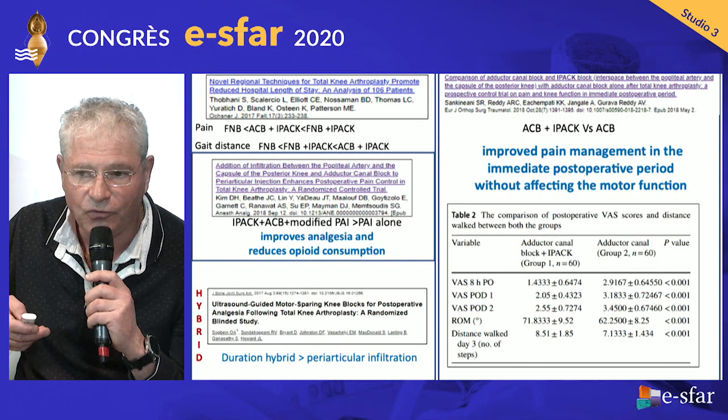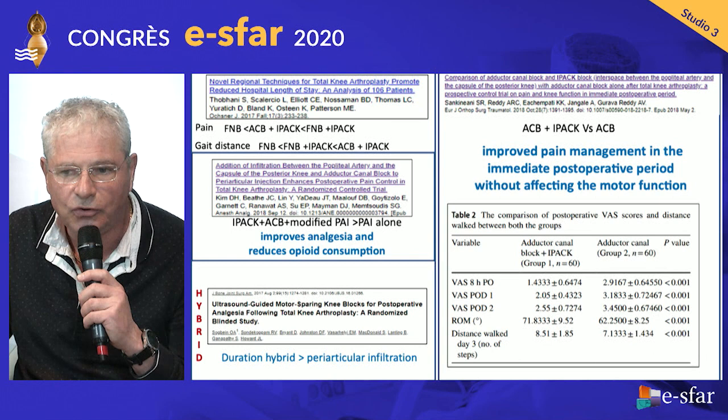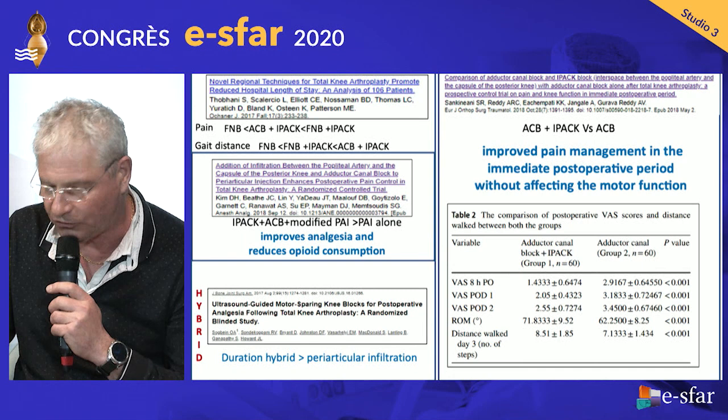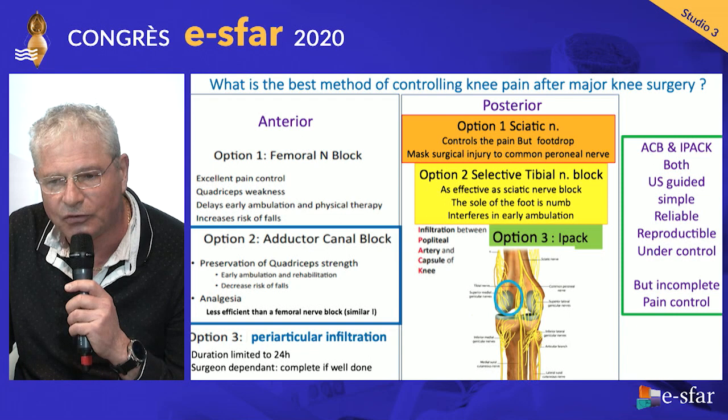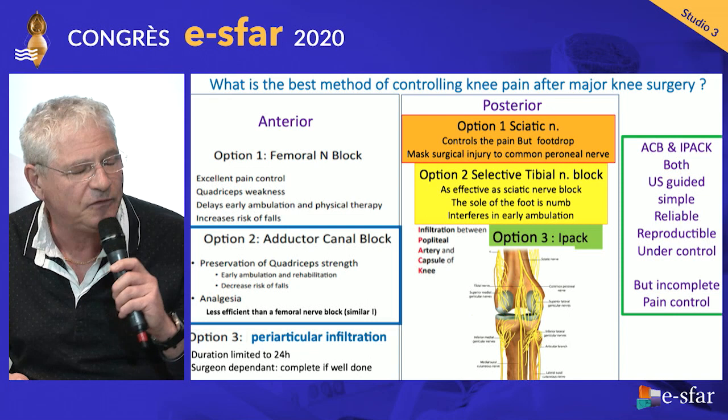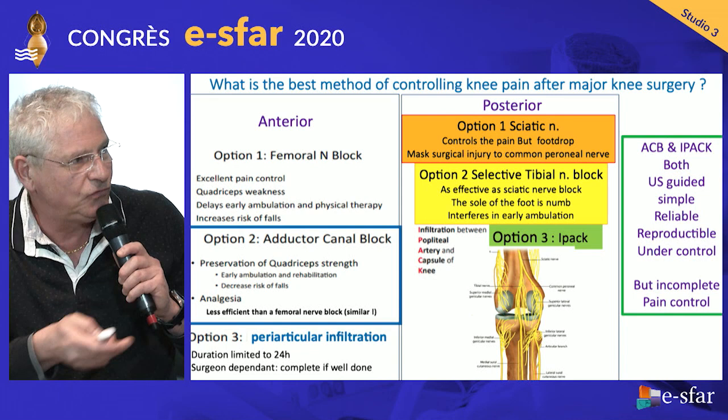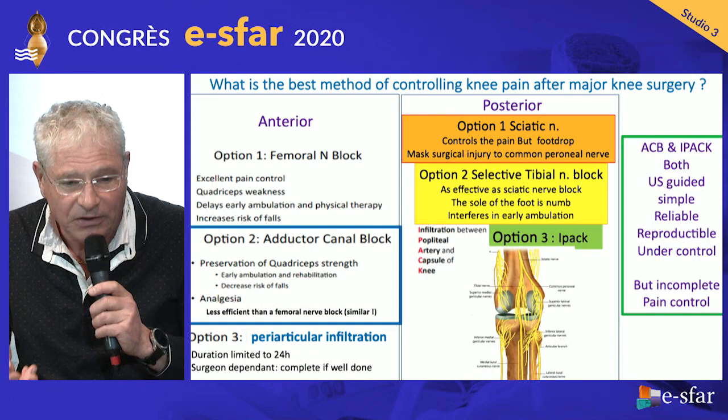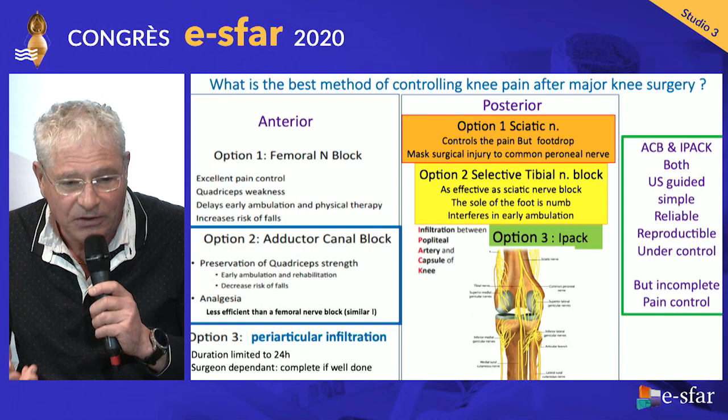If you decide not to perform a femoral and obturator nerve block and instead combine IPAC with adductor canal, you achieve pretty good analgesia — though not as complete as with proximal main trunk blocks, but with less risk of motor impairment. Personally, if it were my own total knee, I would choose Olivier Rontès' technique because I want to be pain-free for 24 hours. After that, that's life.